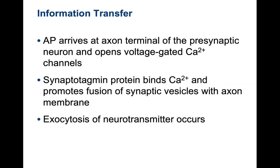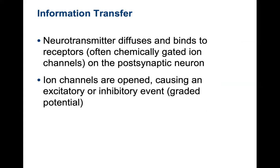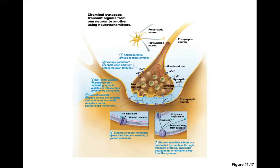As the action potential arrives at the axonal terminal of the presynaptic neuron and opens voltage-gated calcium channels, calcium promotes the fusion of synaptic vesicles within the axonal membrane. The calcium initiates exocytosis — the release of the vesicle out into the synaptic cleft. The neurotransmitter then diffuses and binds to receptors, often chemically-gated ion channels, on the postsynaptic neuron or on skeletal, cardiac, or smooth muscle or a gland. The ion channels open, causing excitatory or inhibitory events as a graded potential, which may eventually lead to an action potential.